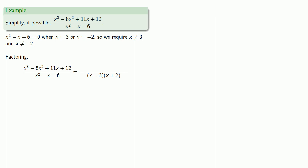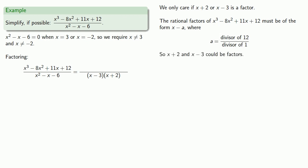Now we need to factor the numerator. But remember, we only care if x plus 2 or x minus 3 is a factor. Any other factorization is unimportant. So the rational factors of x cubed minus 8x squared plus 11x plus 12 must be of the form x minus a, where a is a divisor of 12 over a divisor of 1. Unfortunately, this means that x plus 2 and x minus 3 could be factors. We have to check them out.